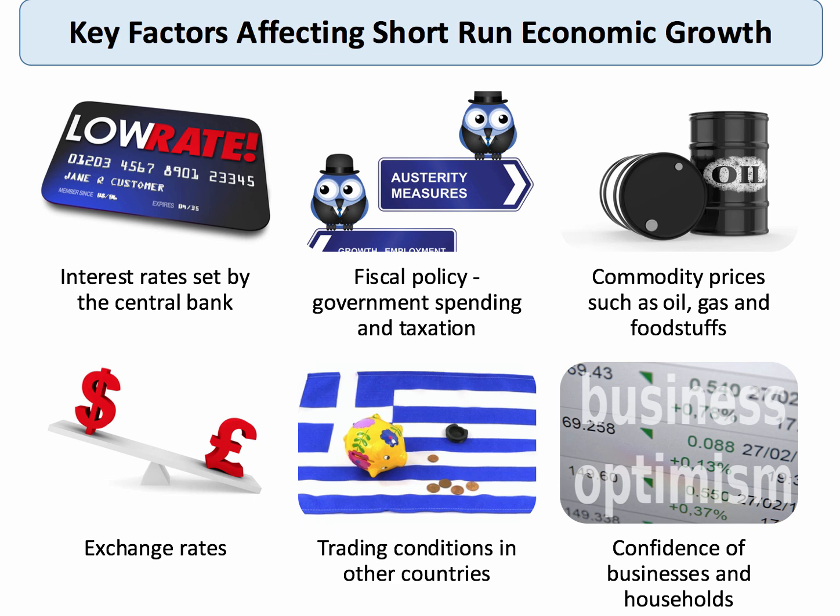Fundamentally, in the short-term, the rate of economic growth is determined by the animal spirits — or the confidence — of both businesses and households. When businesses become more optimistic, they tend to hire more people, buy in more raw materials and components, and expand their output. Conversely, when household confidence takes a hit, people save more and spend less, and therefore the short-term growth of the economy will slow down. So these are some factors affecting short-term economic growth.